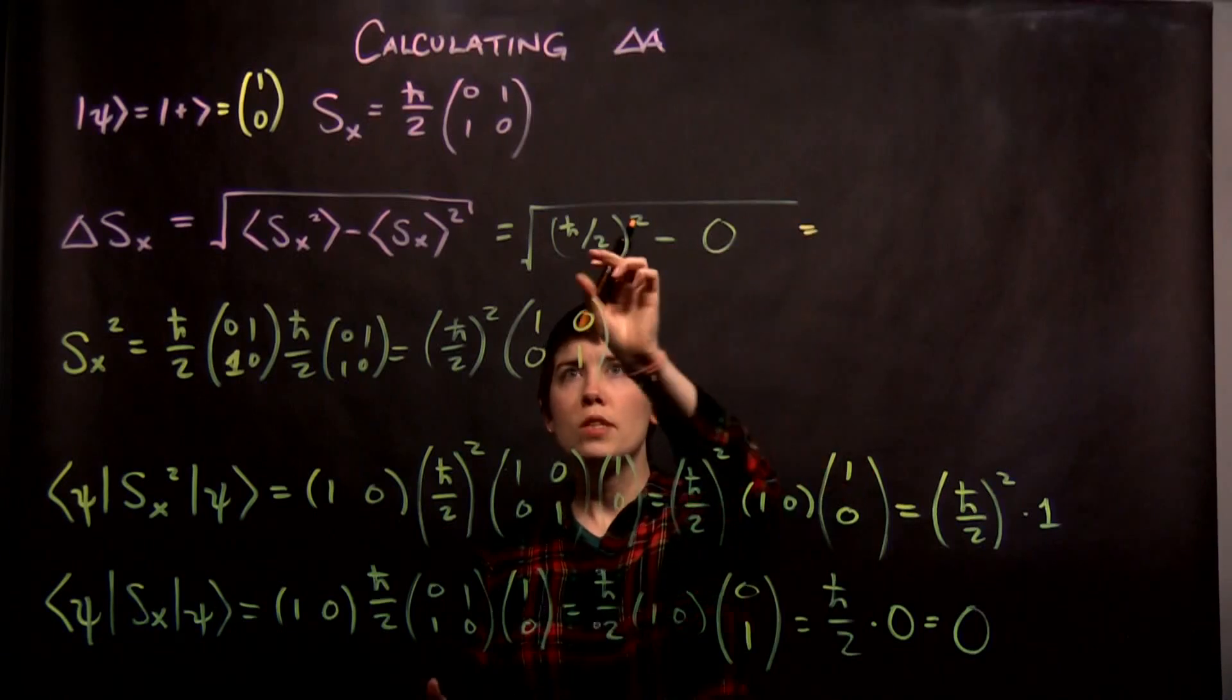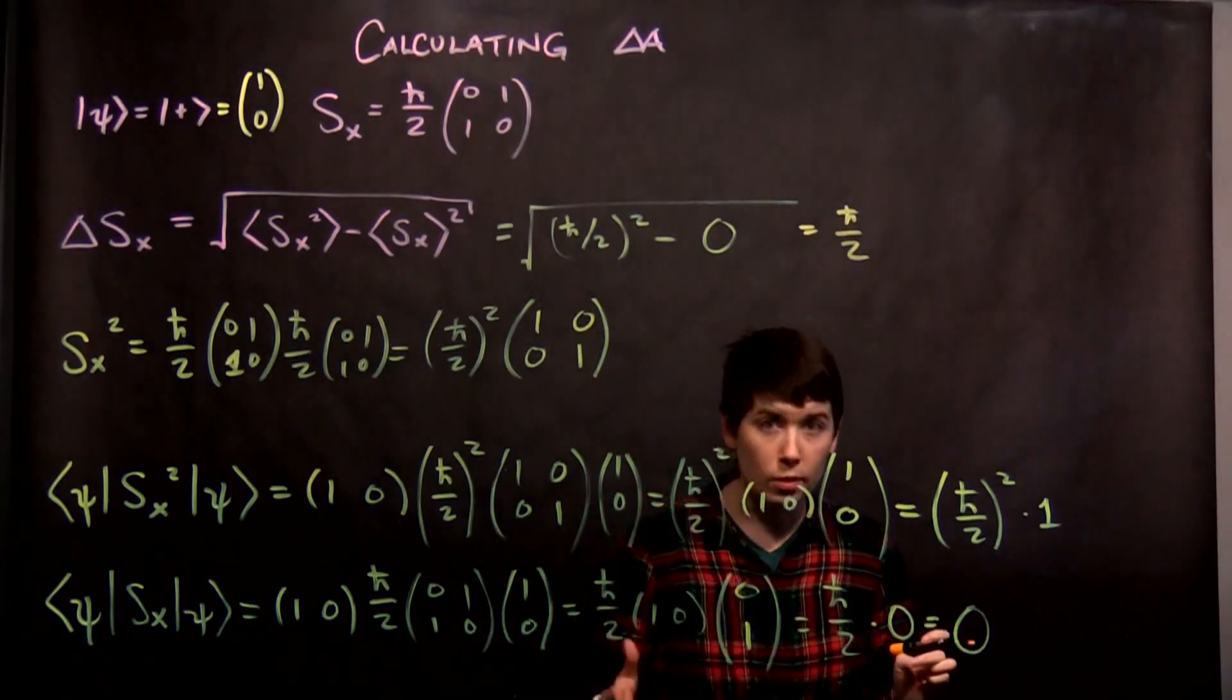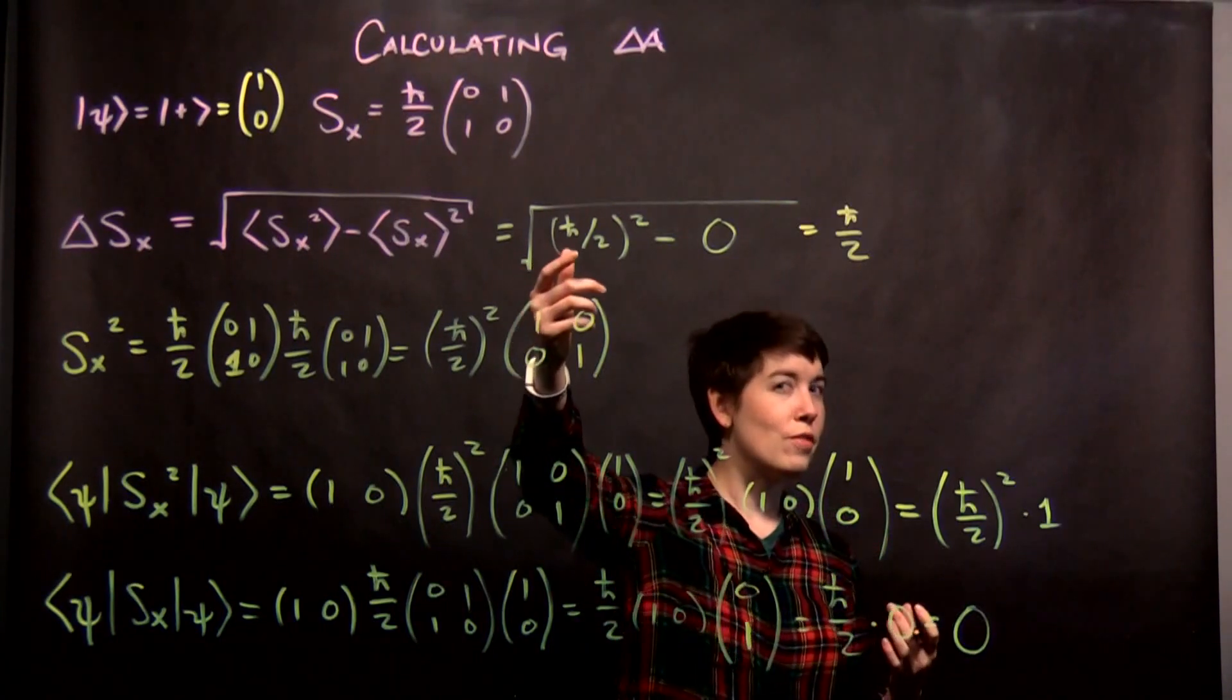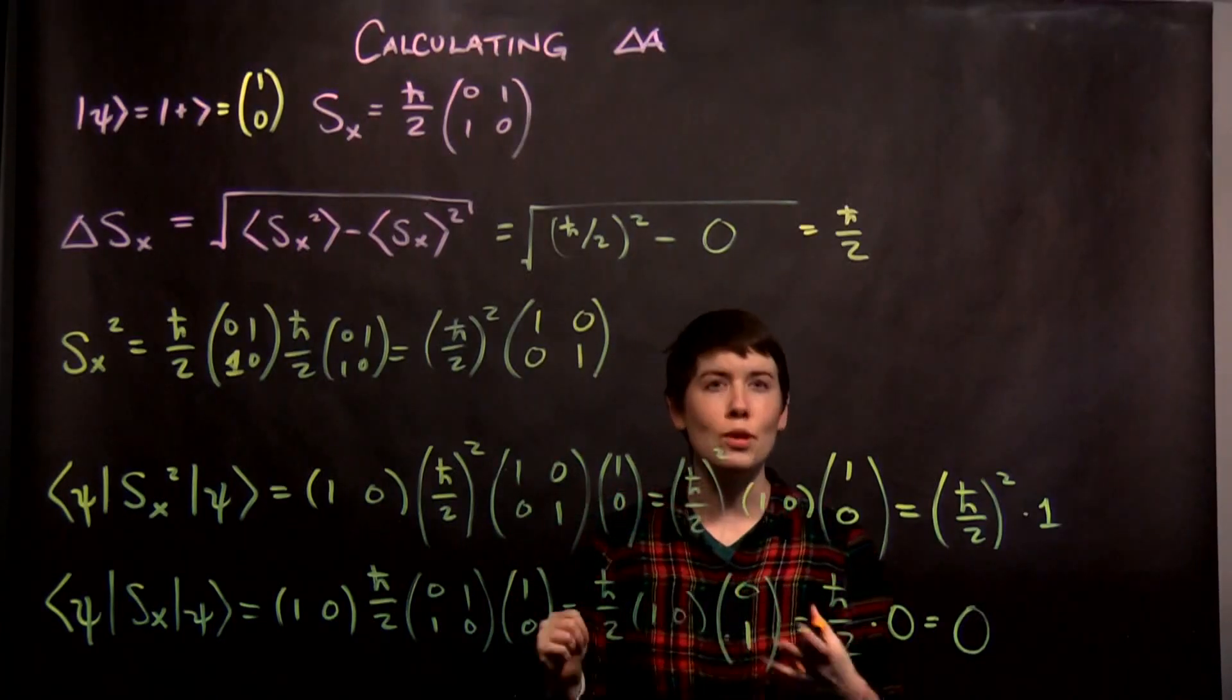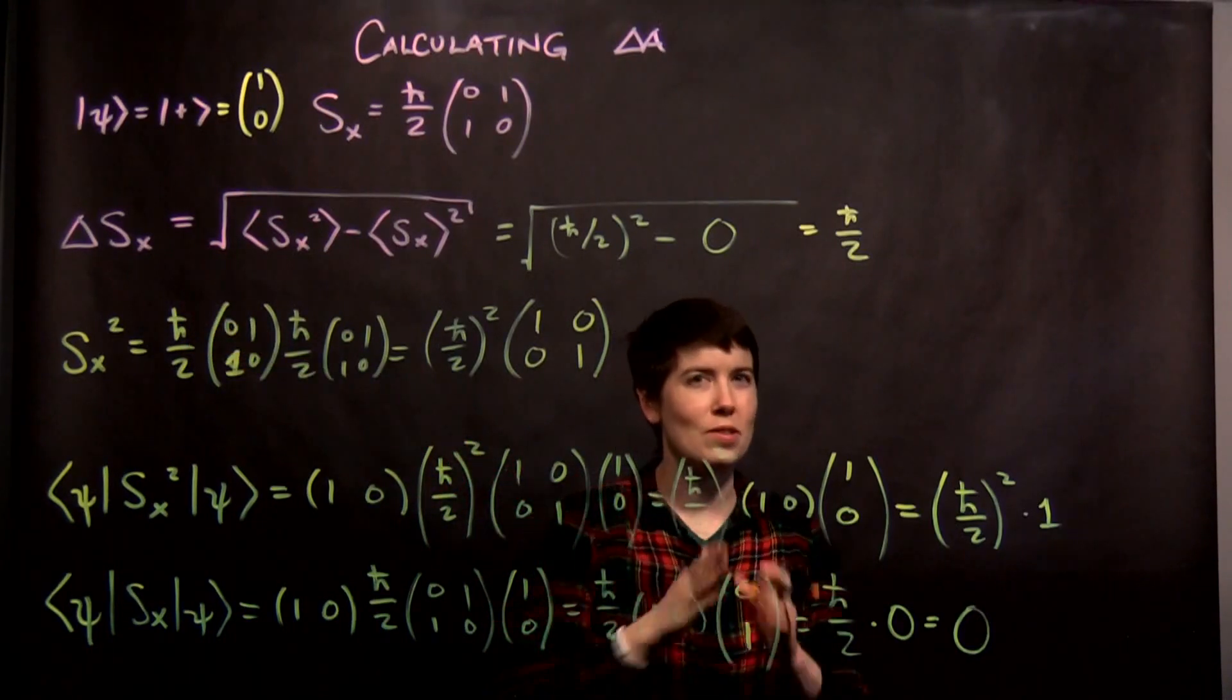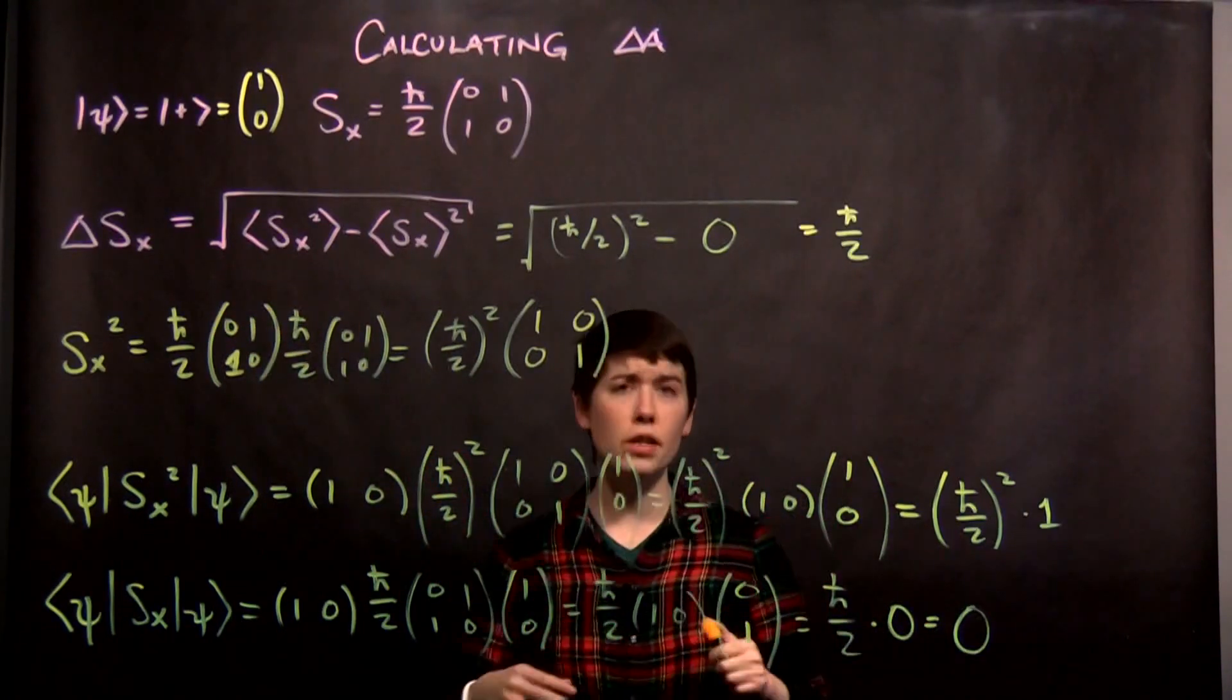So now, when we take the square root of this, we are just going to get h-bar over 2. Now, one thing you want to be careful about is that often times in this class, especially when calculating eigenvalues, when you take the square root of a number, remember that it's going to give you two values. So you might say, ah, is this plus or minus? Well, this is an uncertainty, so we can just use the positive value, right? This is basically saying, what is its width? And a width would be a positive number. So we get a value here.